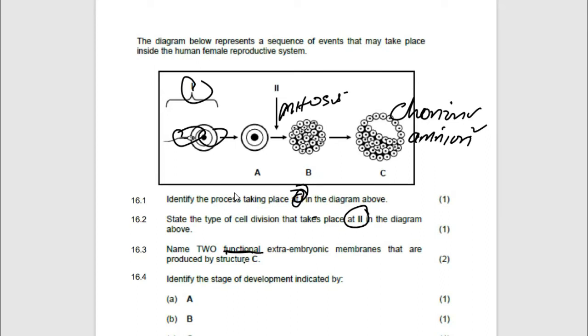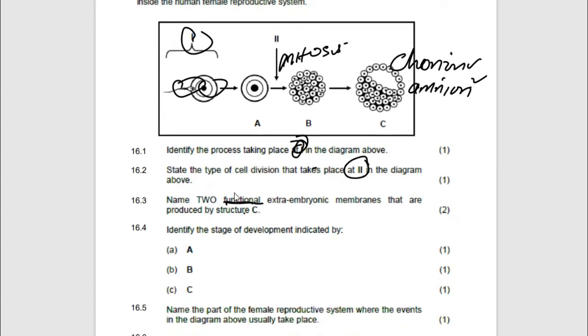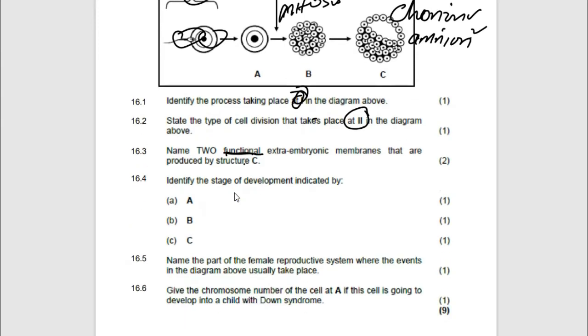Identify the stage of development indicated by A. What is happening there? That is a zygote. And then B, it is a morula. And then C, it's a hollow ball of cells which we call blastula or blastocyst. Make sure that you write the correct spelling.